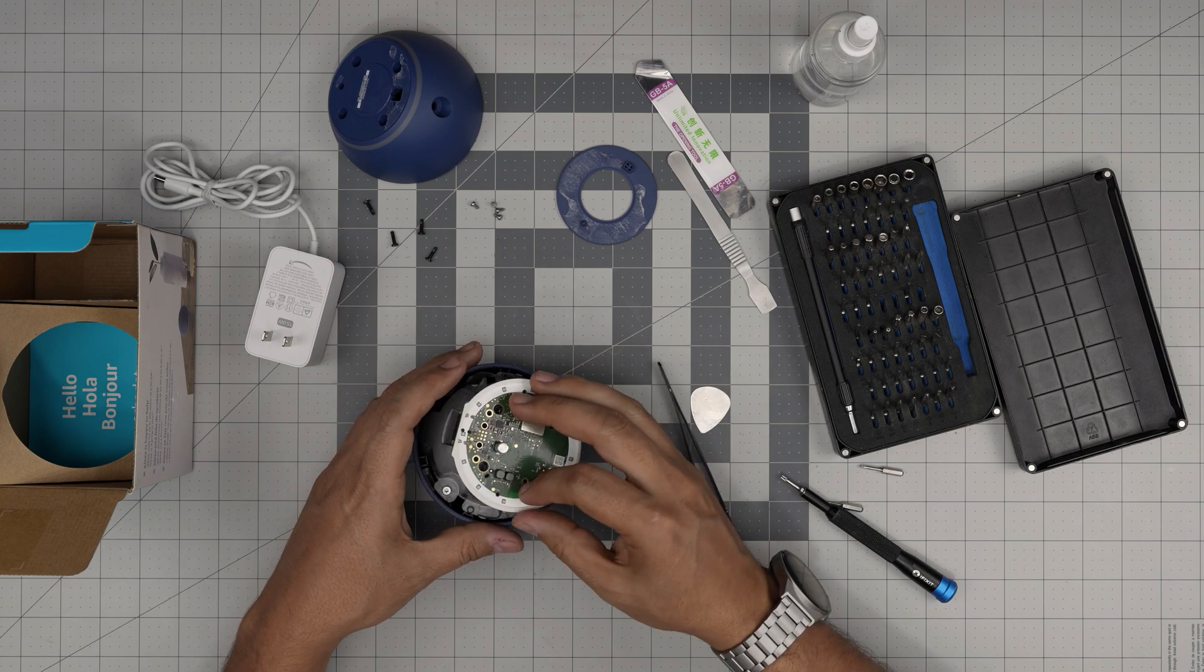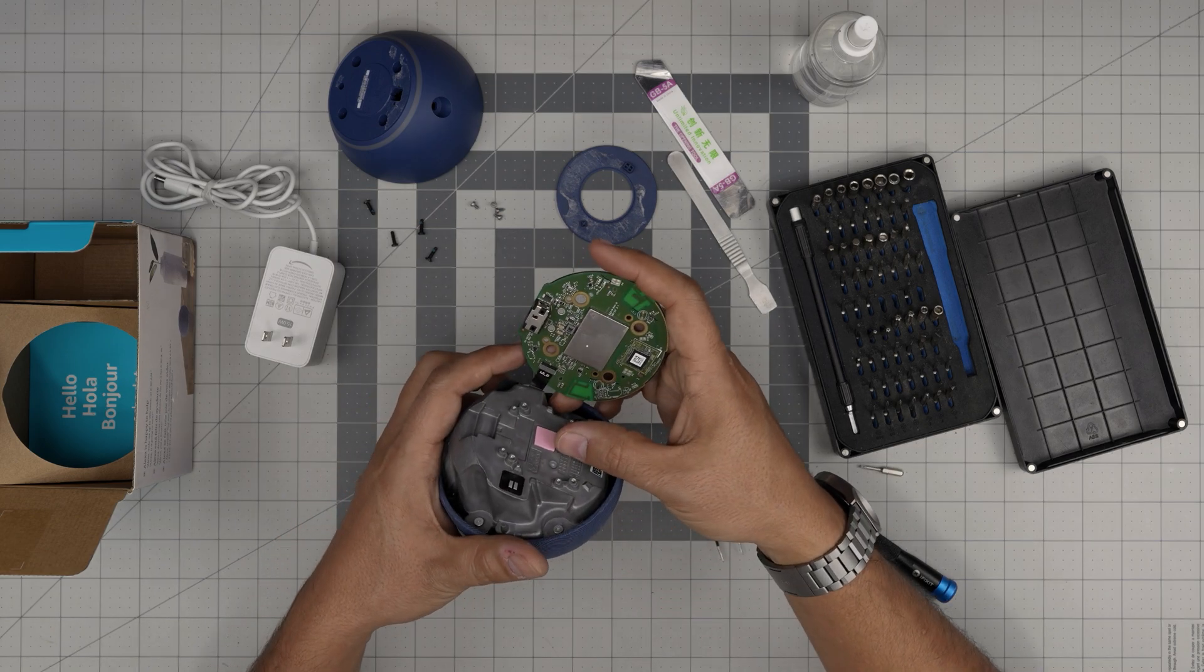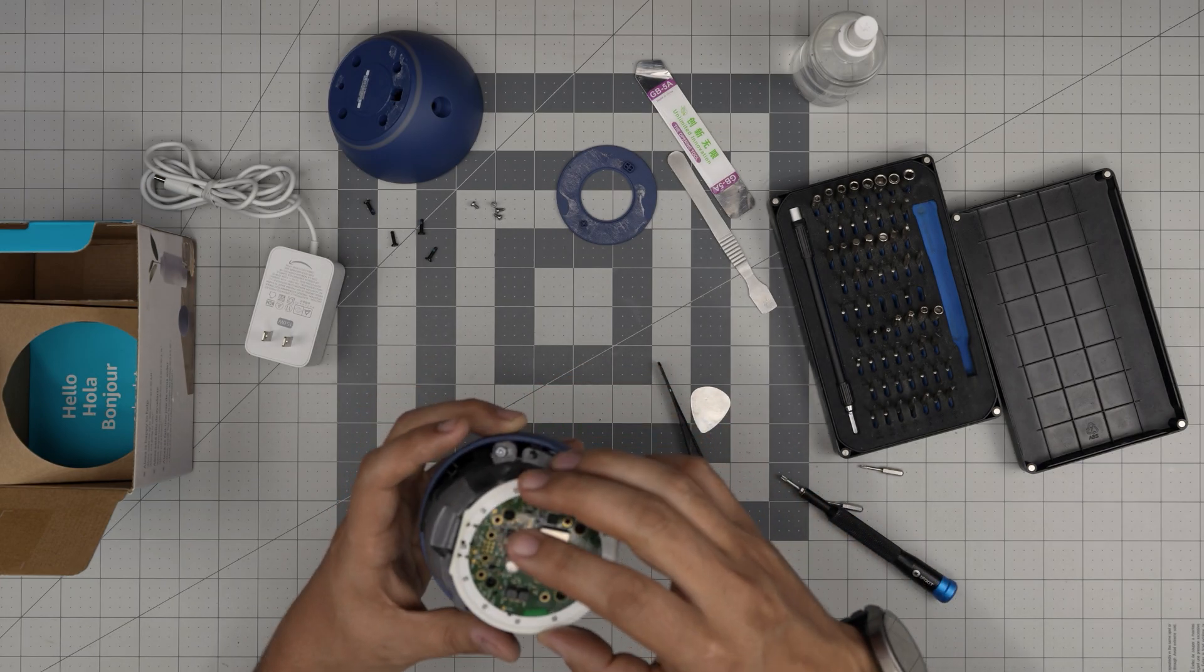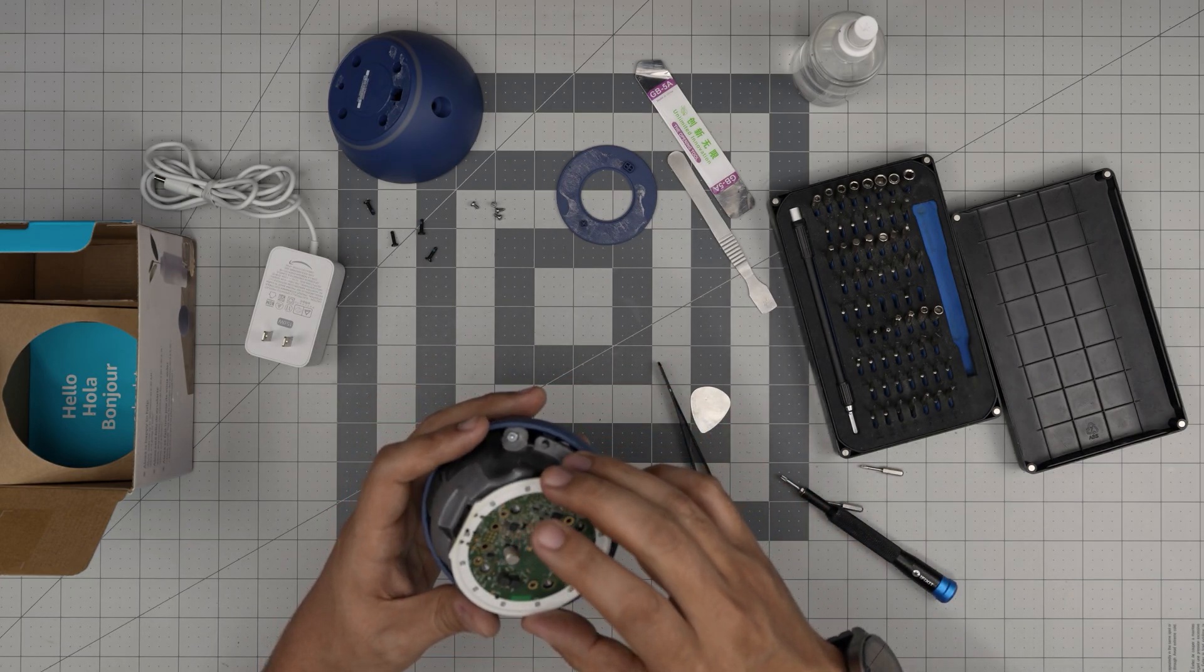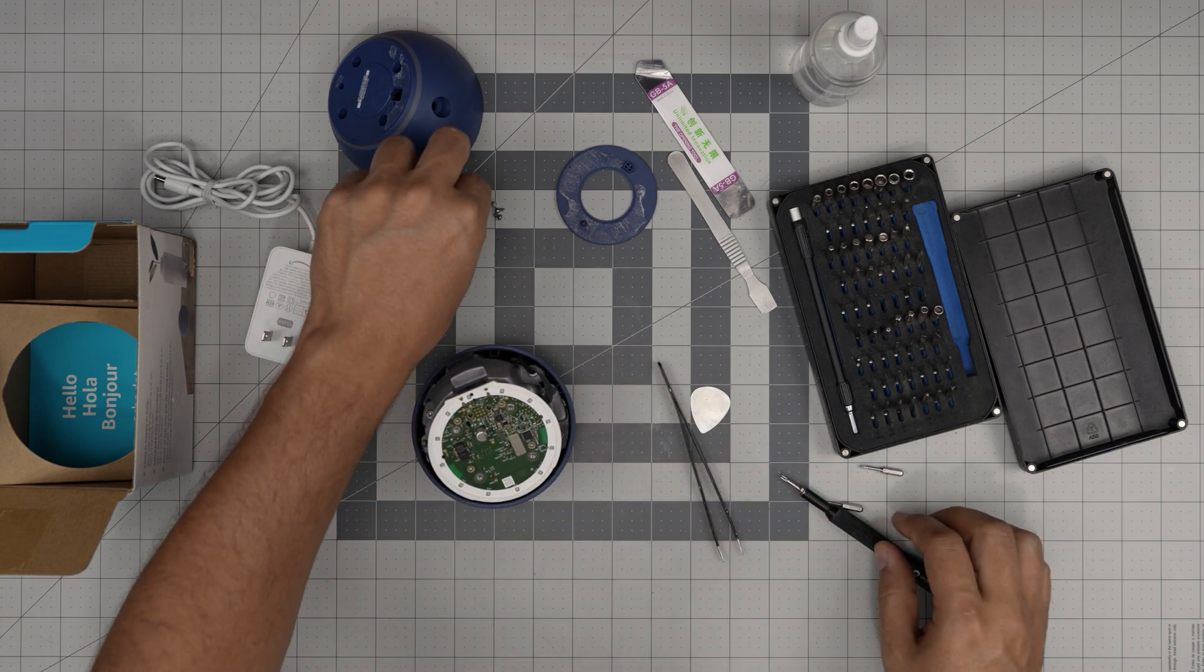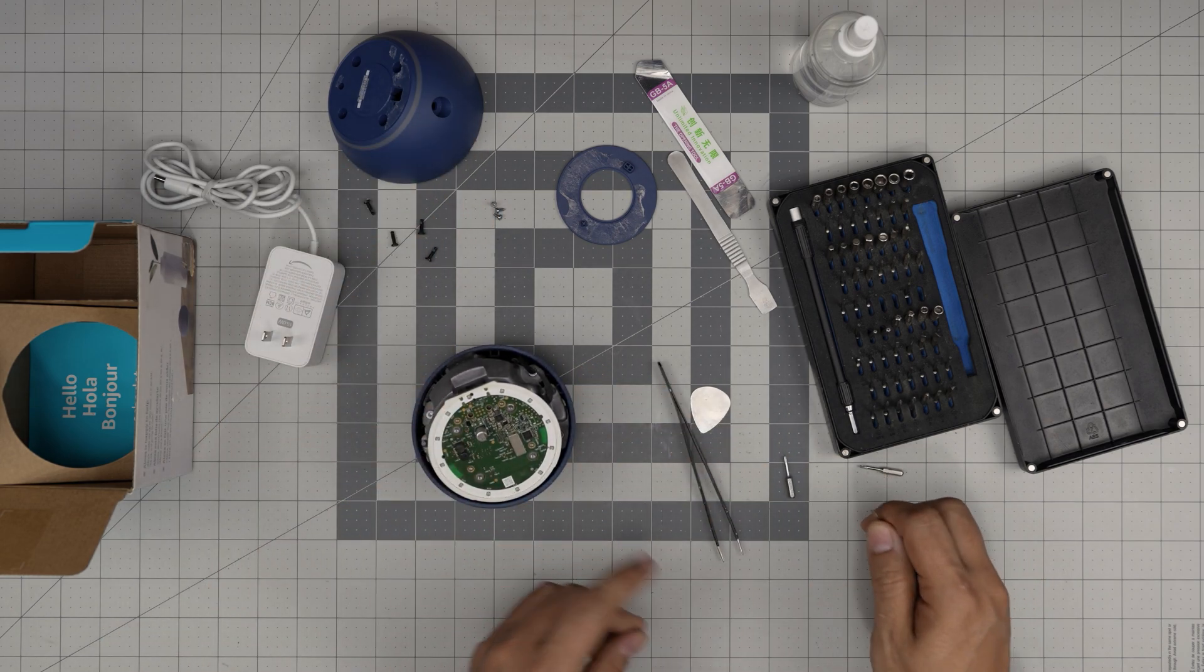Gently bring it over. You can replace the thermal pad with a two millimeter thermal pad, but this one is purified. All you want to do is put this base right over and put the tiny screws that you removed right on the top.